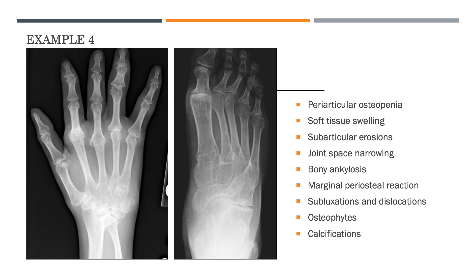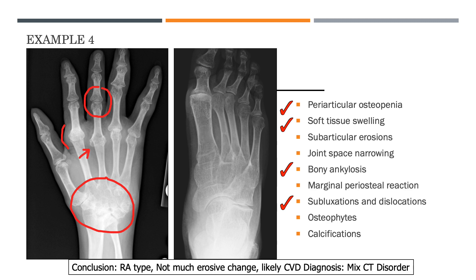In this case, we see periarticular osteopenia, soft tissue swelling around the metacarpophalangeal joint, and bony ankylosis - all the wrist bones appear fused together. One might think inflammatory rheumatoid arthritis, and there are some subluxations with overlapping bones. However, on closer review, there is not much erosive change - more subluxations and soft tissue changes - and this patient turned out to have mixed connective tissue disorder.